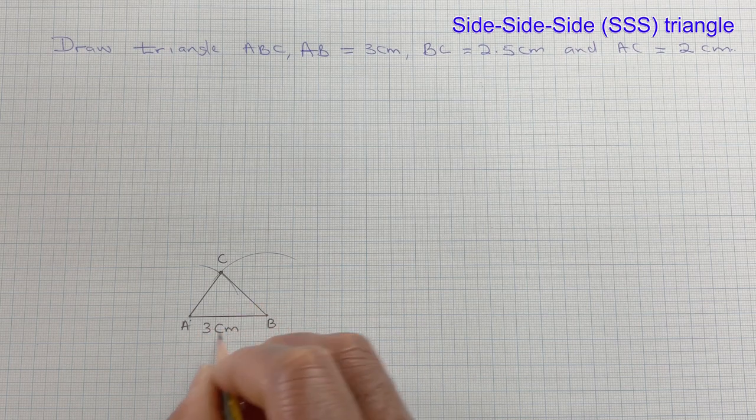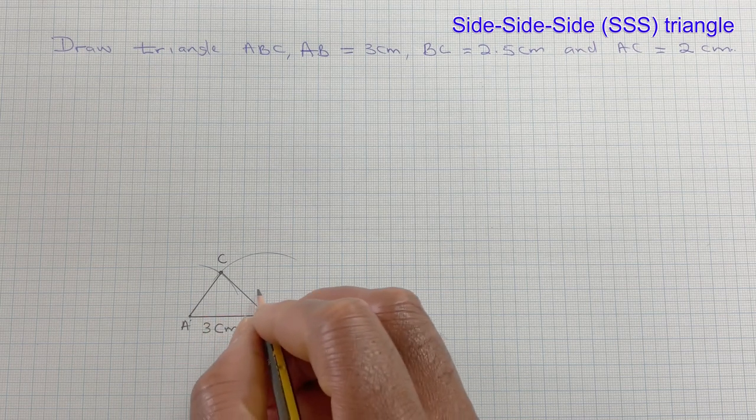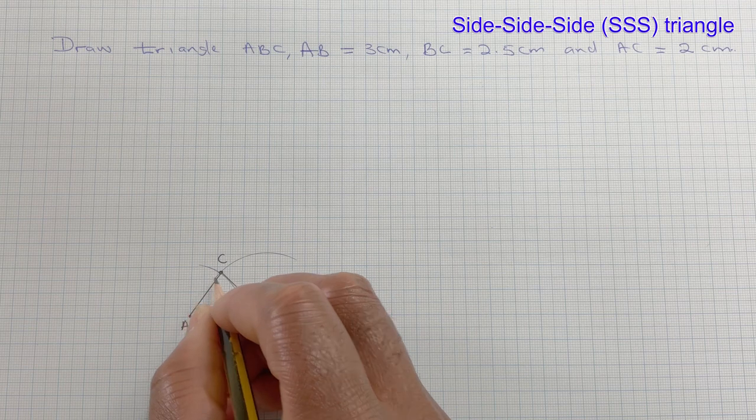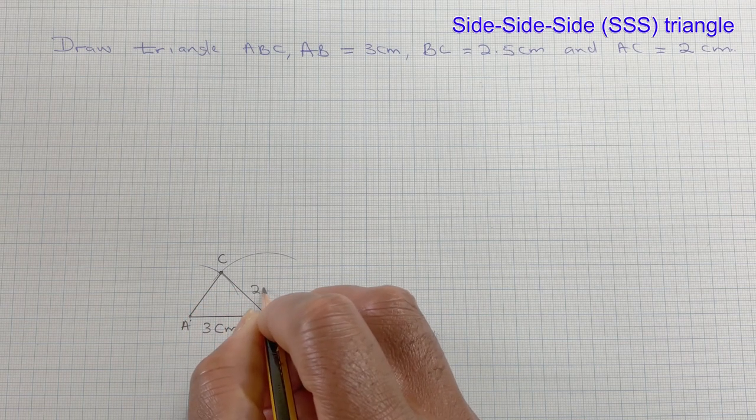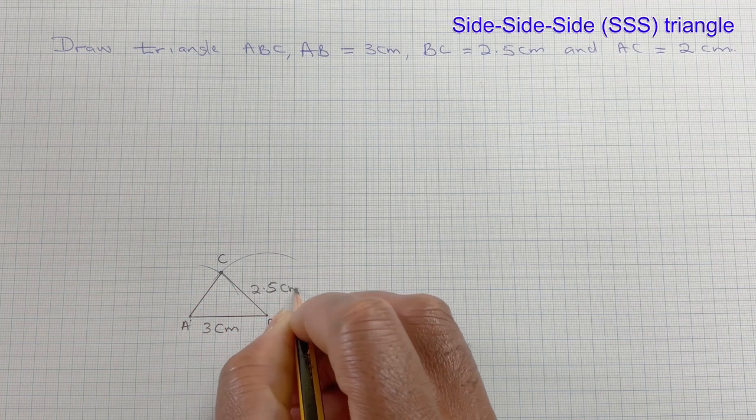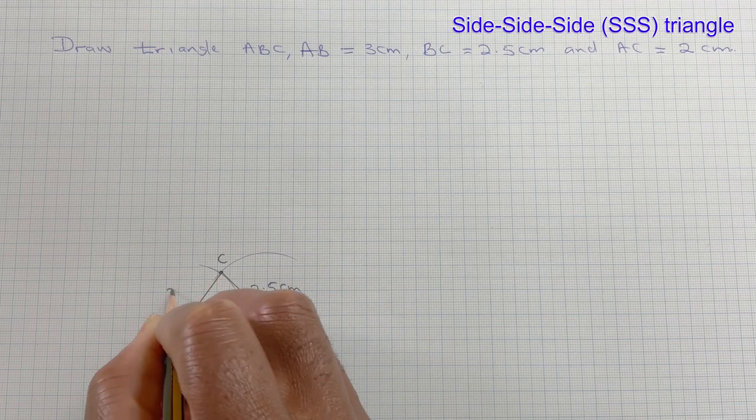And that's how you construct your triangle. So BC is 2.5 and AC is 2 cm.